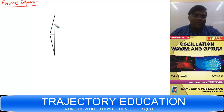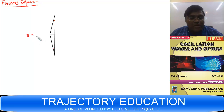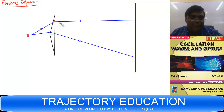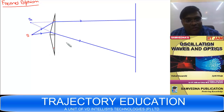This is the biprism — both refracting angles are very very small. There is a source S. Light emitted from S falls on the upper prism and lower prism and gets refracted. If we produce the refracted rays from the upper prism in the backward direction, they appear to be coming from a virtual source S1.